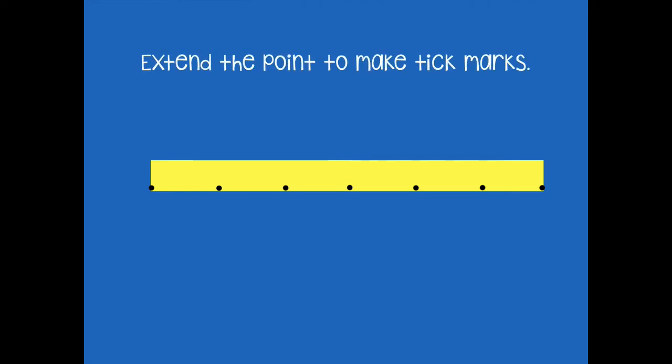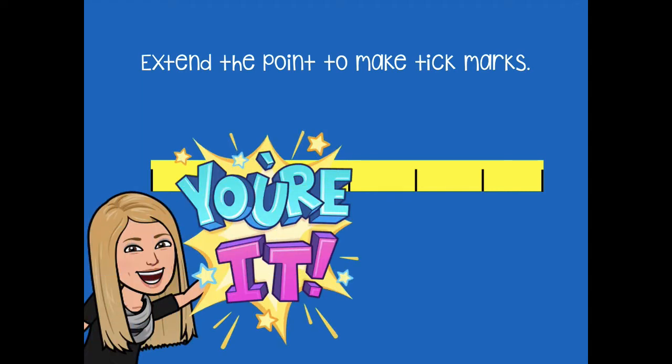Now you're going to take your strip and turn it sideways — we don't need our paper for this part. We're going to extend the points to make tick marks. You're not connecting all the way to the other side — they're only smaller lines, just like those smaller lines you see. Do that for each one, even from the start and stop. Pause the video, do that, and then click play when you're ready for the next step.